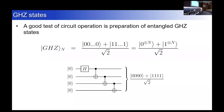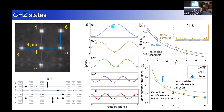We prepared GHZ states using the standard circuit — up to six atoms. Here you see the parity curves from two up to six atoms with the frequency increasing as expected. We were crossing the entanglement thresholds, above the threshold at six atoms, and would have crossed around eight with more atoms. We also looked at the coherence time with GHZ states — it fit pretty well to a one-over-N curve corresponding to collective non-Markovian noise from magnetic field and laser intensity fluctuations. We recently installed better coil drivers and reduced magnetic noise by more than an order of magnitude, so next time we look at this we should be able to do better.